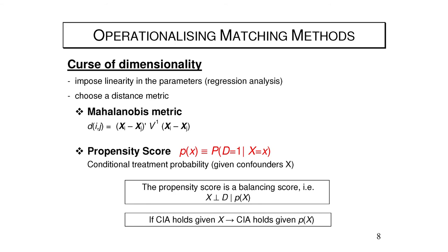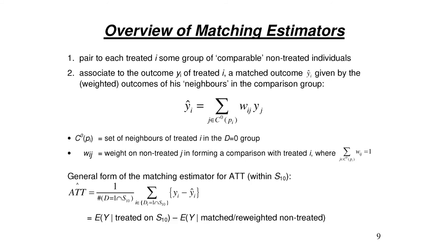If the propensity score is say 0.8, it means that given your characteristics, the share of treated in the sample with those characteristics is 0.8 — your probability of being treated is 0.8. It's tricky but you'll see it more clearly in the data screenshots. This is a big topic to cover in 25 minutes.